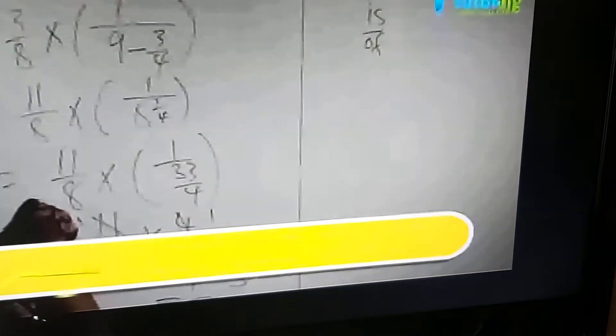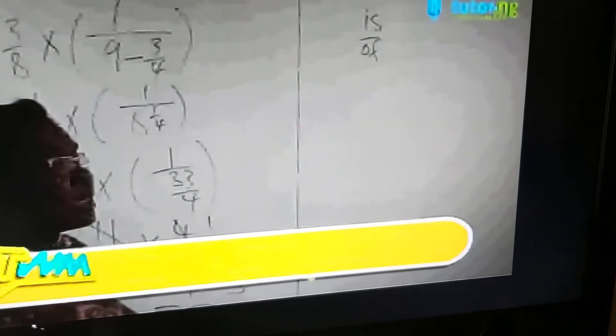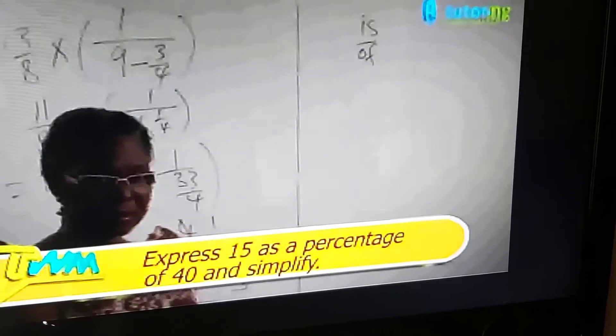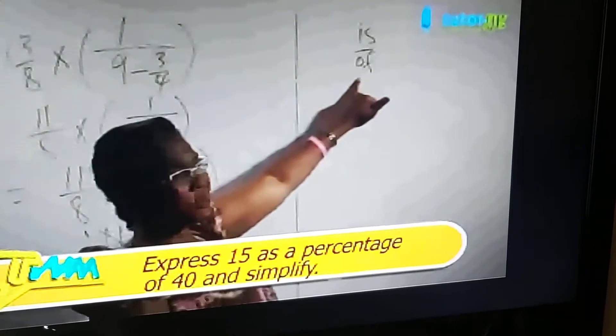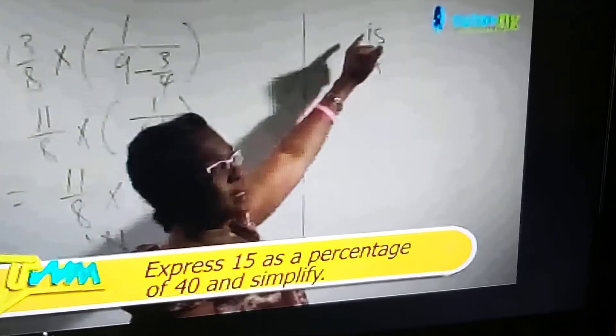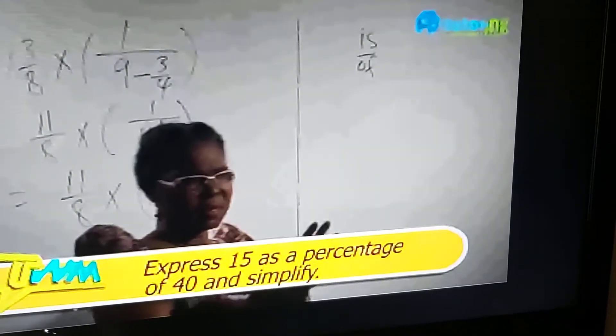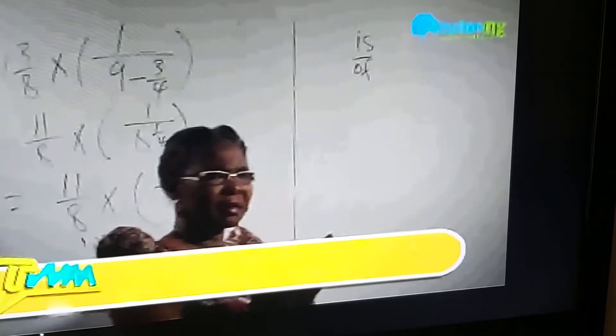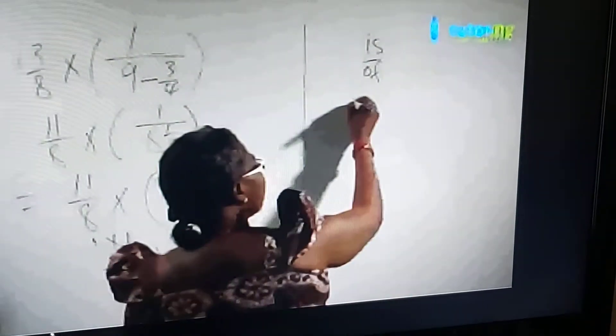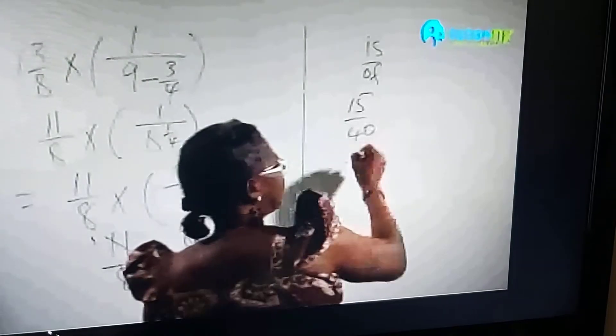So when you say express 15 as a percentage of 40, 'of' is 40, 'is' is 15. Most of the time it's just reading this statement clearly. That's the problem. So you get 15 over 40.